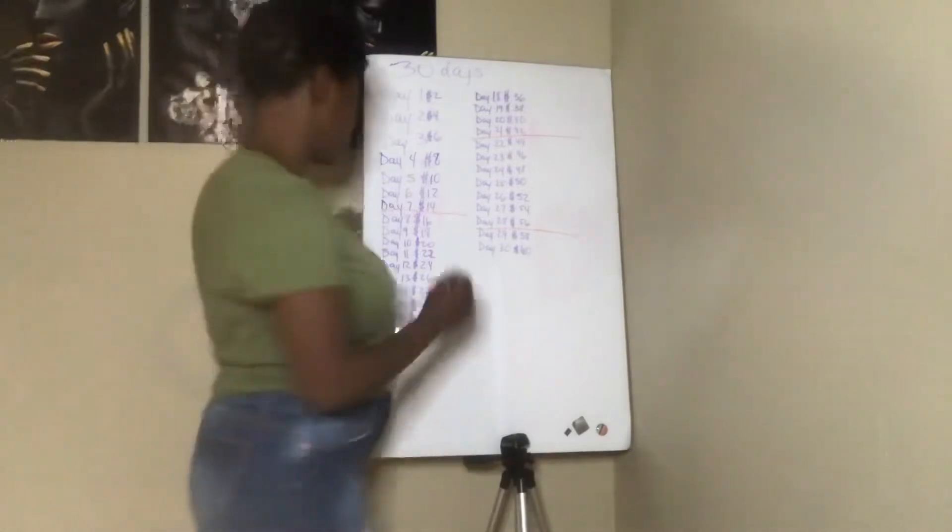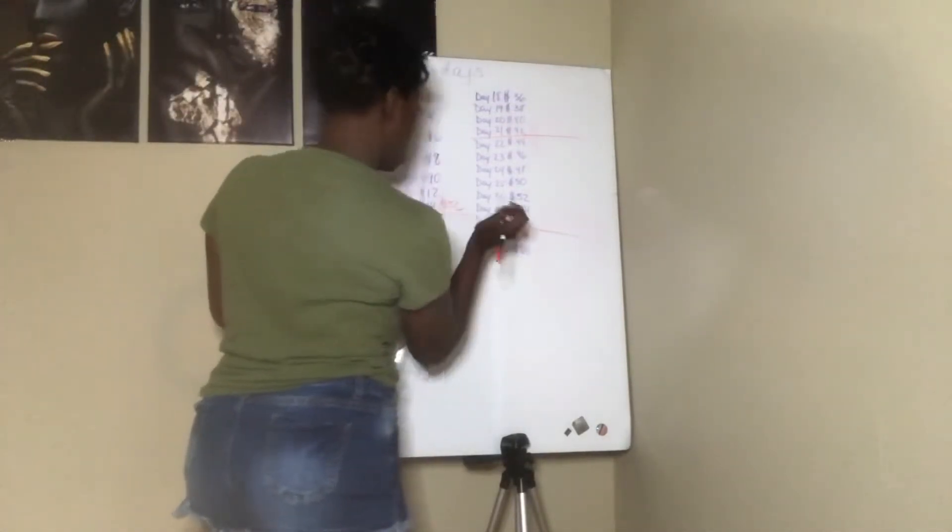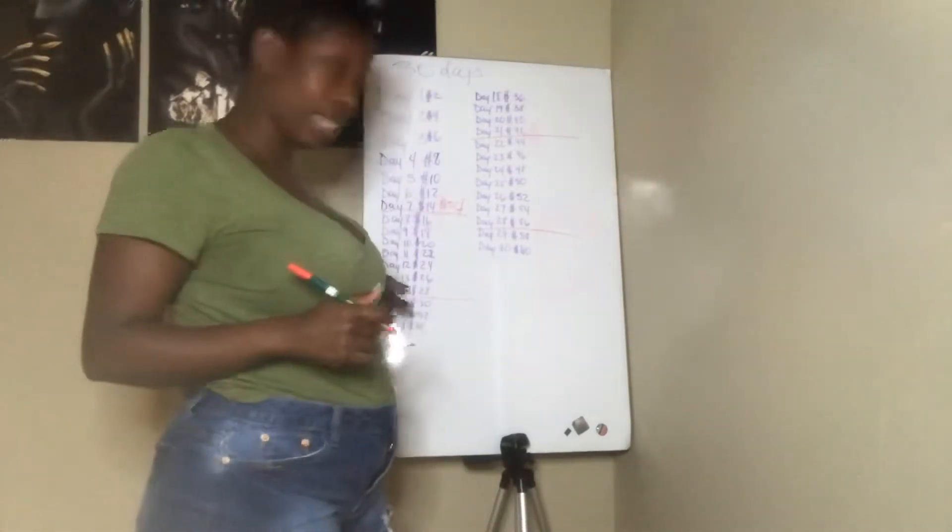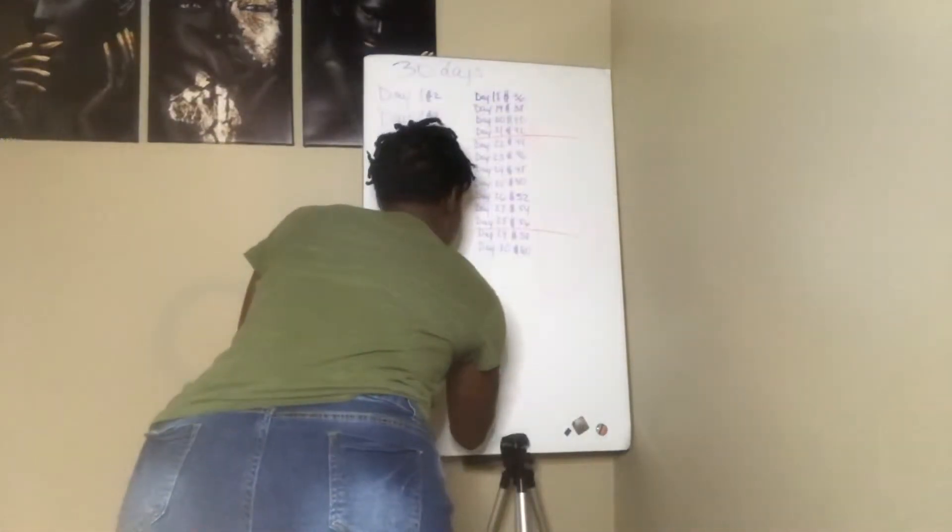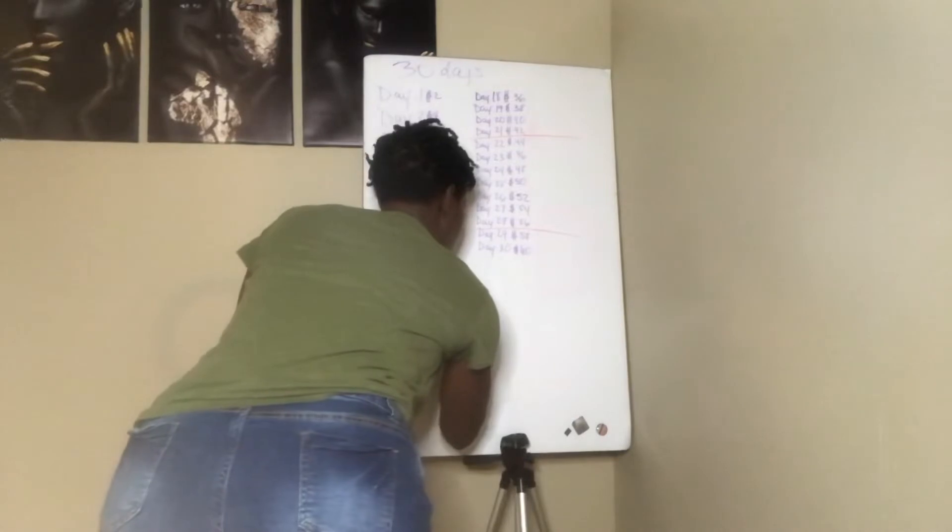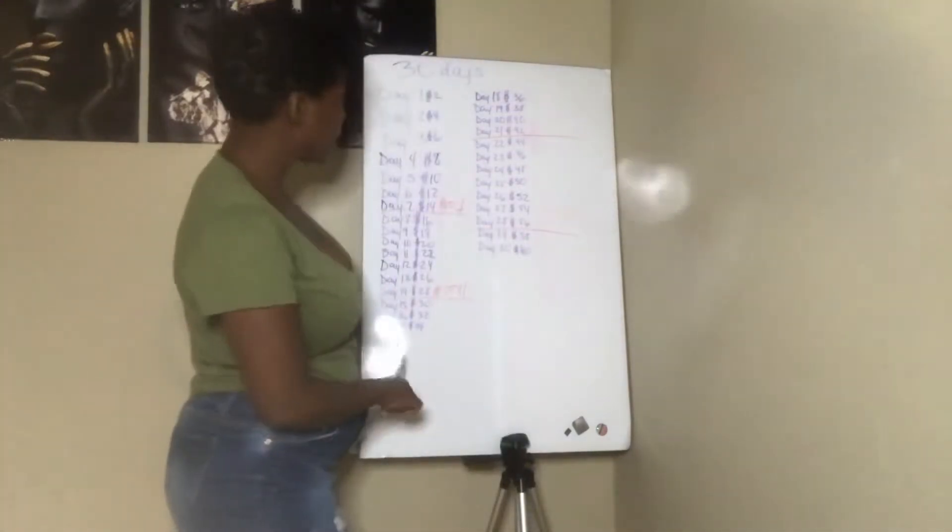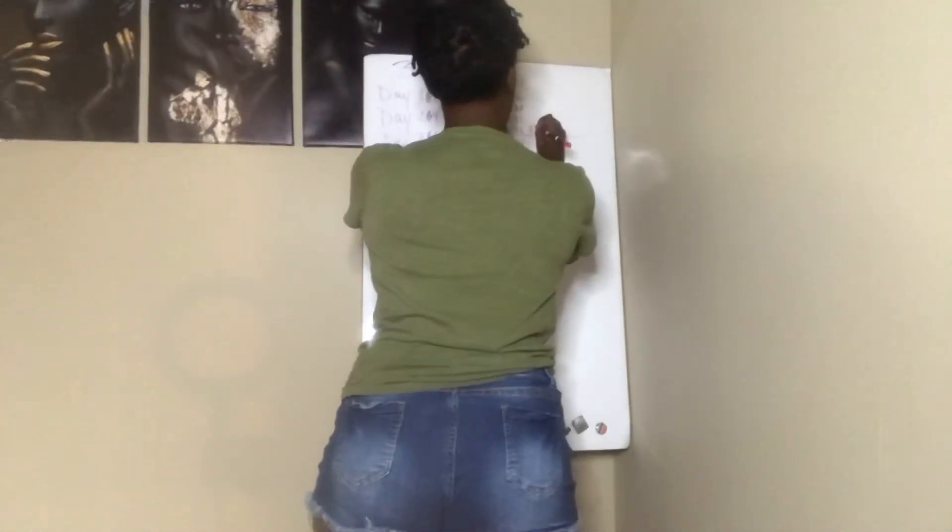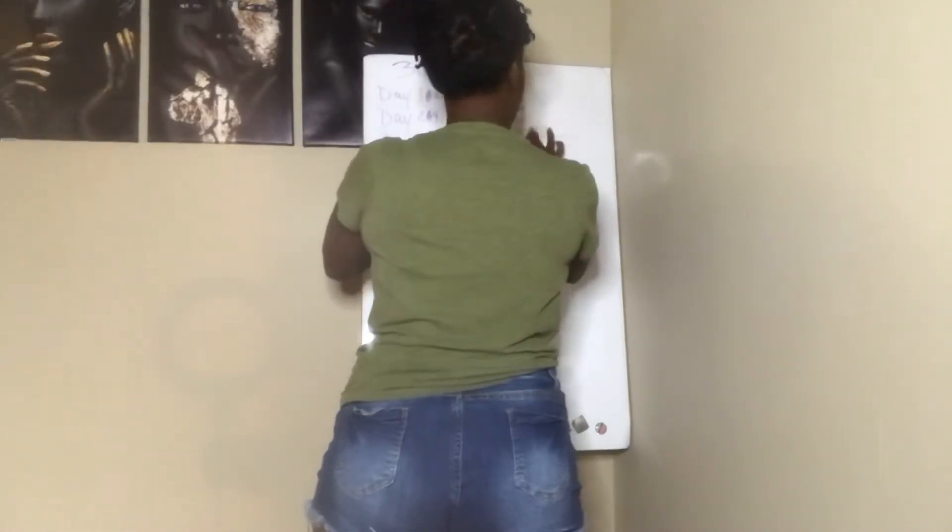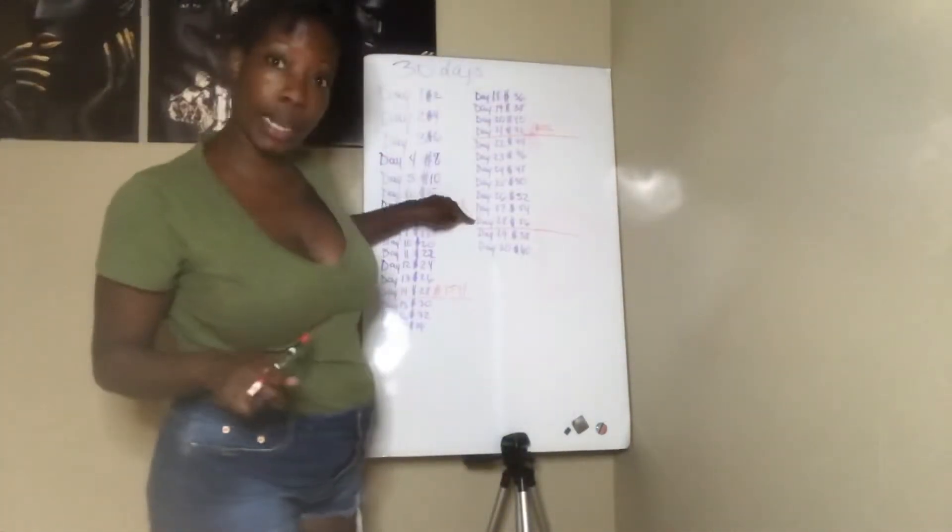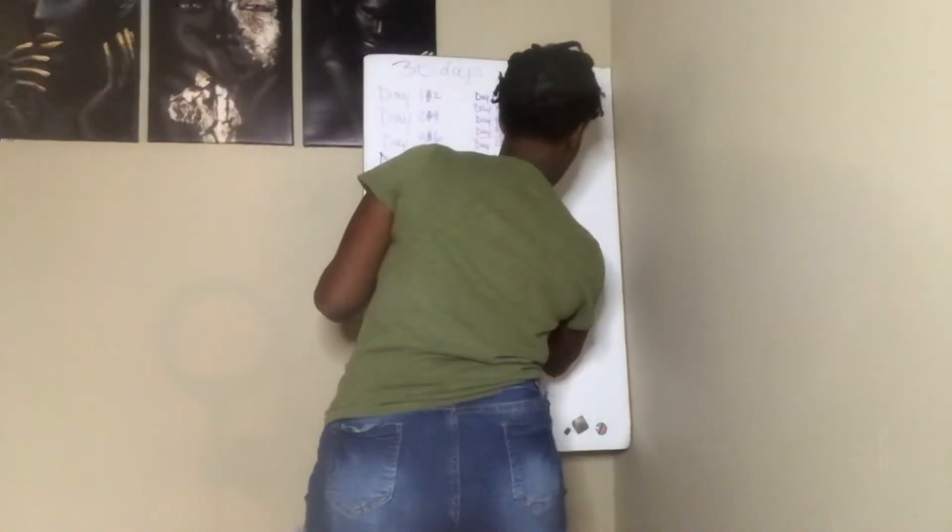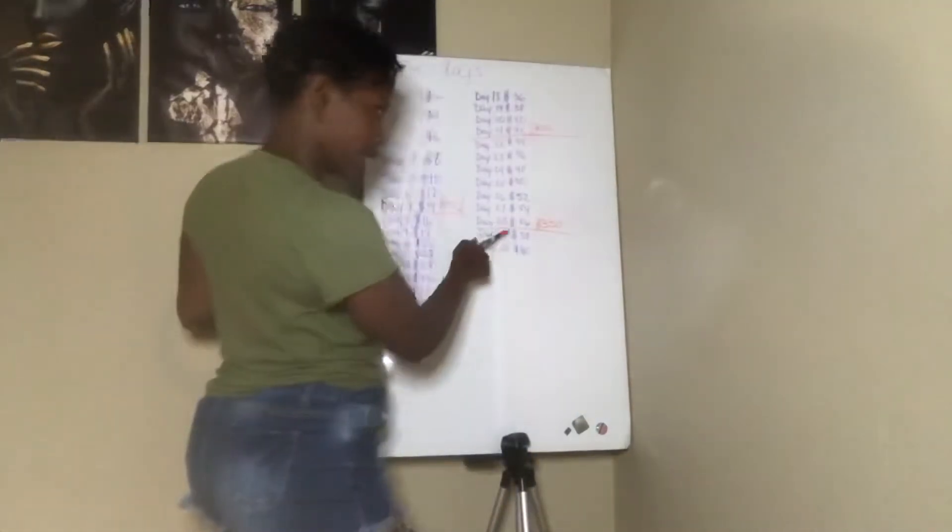That is $56. And then for day eight to day fourteen is $154. And then from day 15 to day 21, that's going to be $252. I didn't realize that you can't even see this stuff. Day 22 to day 28, that's going to be $350, and from day 29 and day 30, that's $118.